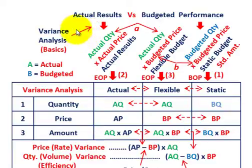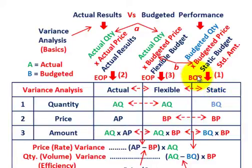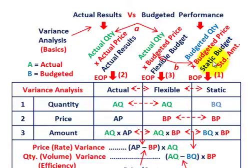With variance analysis, you're really comparing your actual results for the period versus the budgeted performance you set up for the period. The first thing you have to do is set up a static budget amount or standard amount at the beginning of the period — that's simply taking some budgeted quantity of input times some budgeted price, which gives you your standard or static budgeted amount for your different inputs.